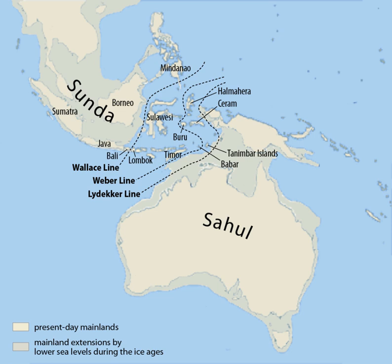Island area and number of terrestrial mammal species are positively correlated, with the largest islands of Sundaland having the highest diversity.